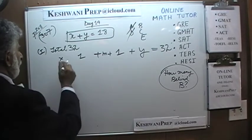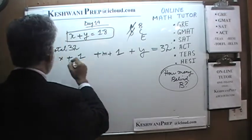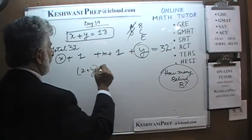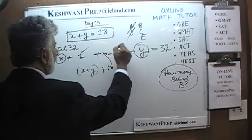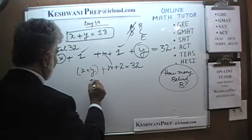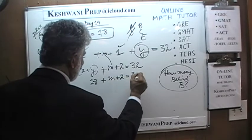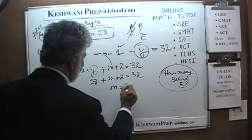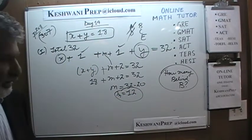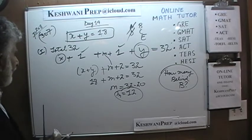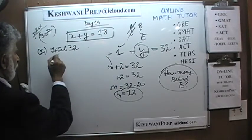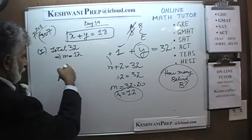To finish: x + y + m + 1 + 1 = 32. Since x + y = 18, we get 18 + m + 2 = 32, so m = 12. That's what the first statement tells us — there are 12 people standing between A and B. But by itself it's not enough.